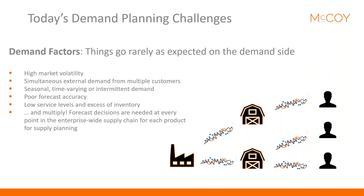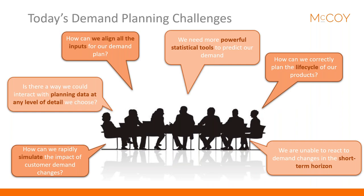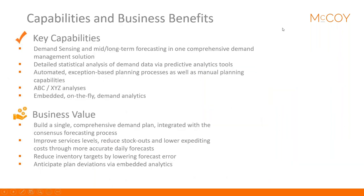Demand has its own specific challenges. Things go rarely as expected on the demand side — you can have high market volatility, seasonal or intermittent demand, low forecast accuracy, low service levels, and too much stock. As a planner, you want to rapidly simulate the impact of customer demand changes and react quickly even in a short time horizon. You may want to plan data at any level of detail, align all inputs for a consensus demand plan, use more powerful statistical tools, and correctly plan product life cycles.